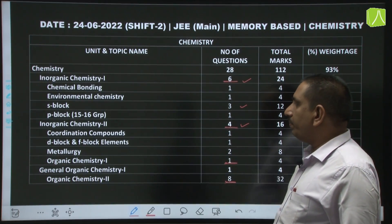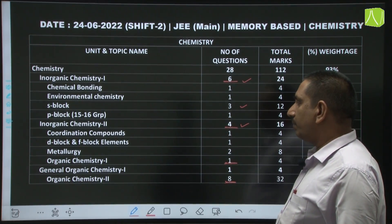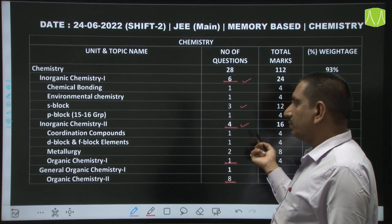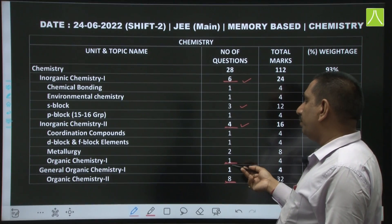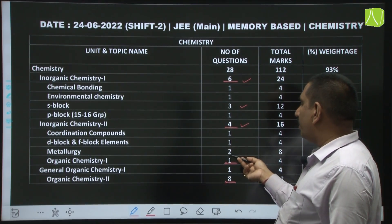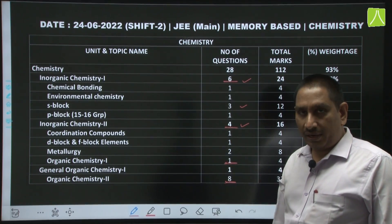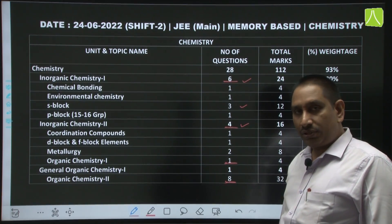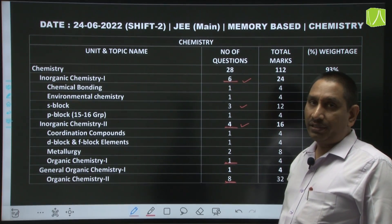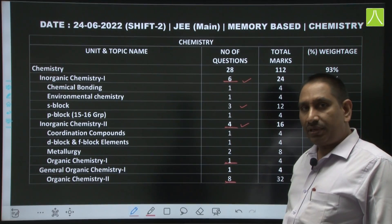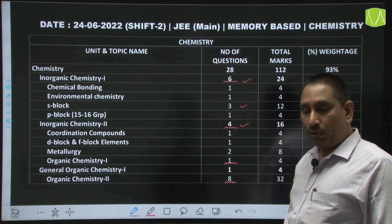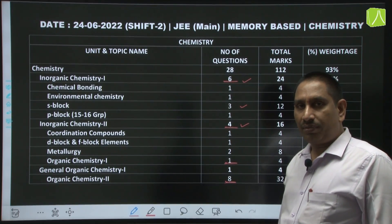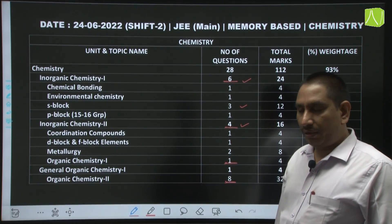Inorganic chemistry part 2, that is 12th chemistry: coordination gives some questions, D and F block gives some questions, and metallurgy gives 2 questions. Every session, metallurgy gives at least 1 question, coordination compulsorily gives 1 question, and S-block and P-block groups also compulsorily give questions.